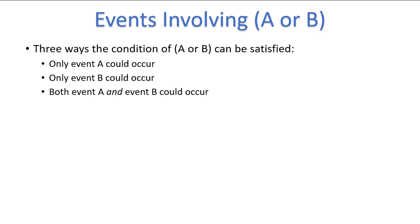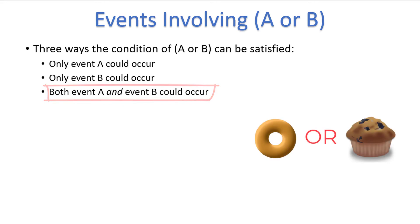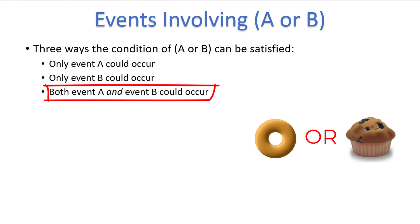Our everyday usage of the word OR doesn't necessarily cover the third case, but when discussing probabilities, we include it. It's like me asking you to purchase either bagels or muffins from the bakery. If you came back with both muffins AND bagels — the third condition — I might tell you that you haven't followed my instructions, I only wanted one or the other. But in terms of probability theory, we would say that you have satisfied my request of buying either bagels or muffins.